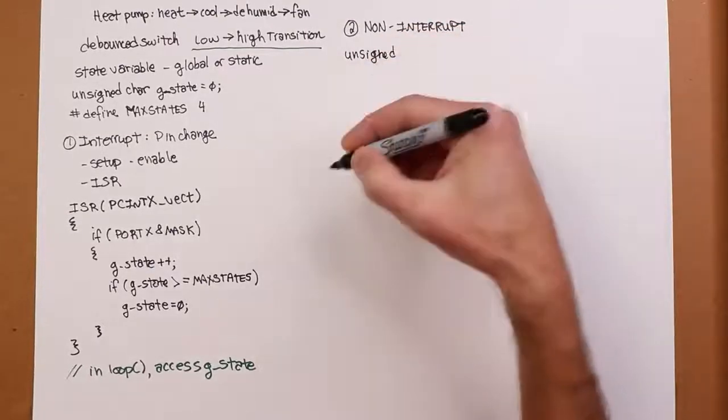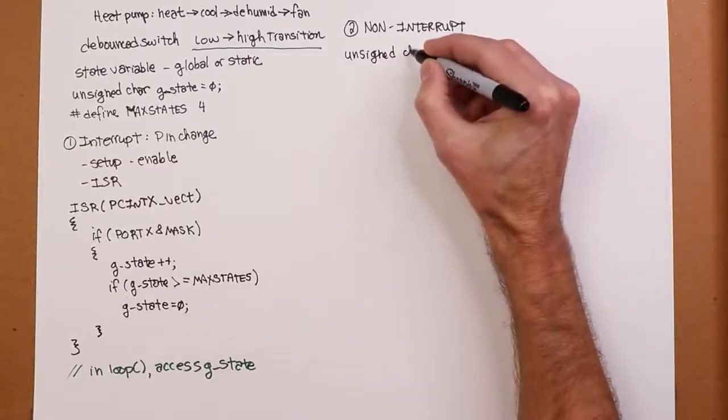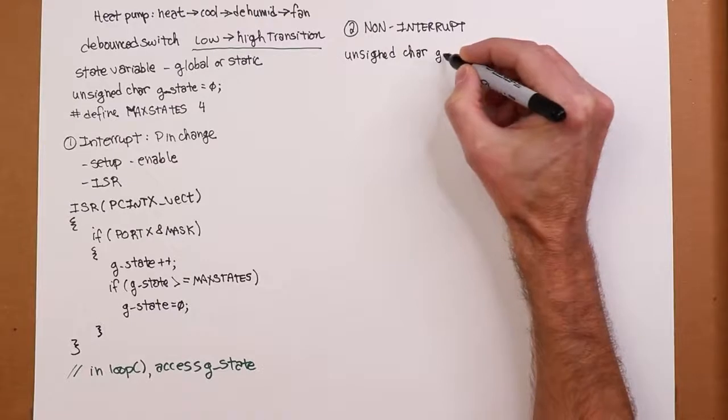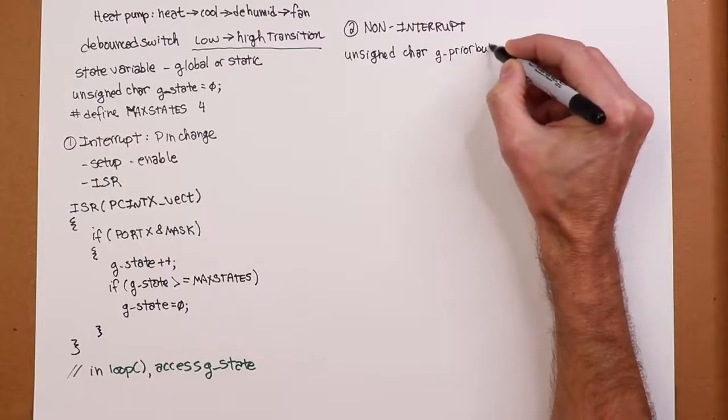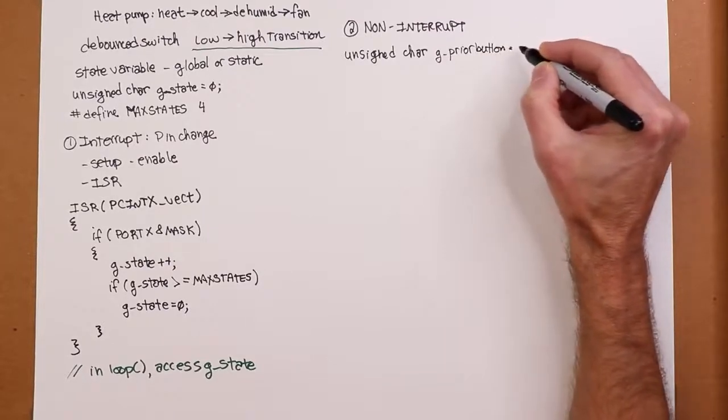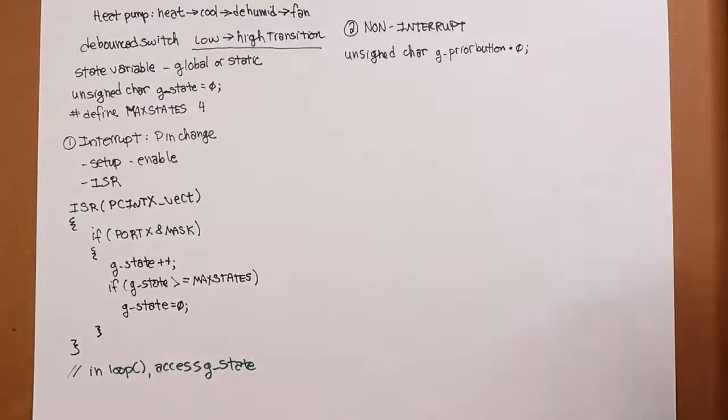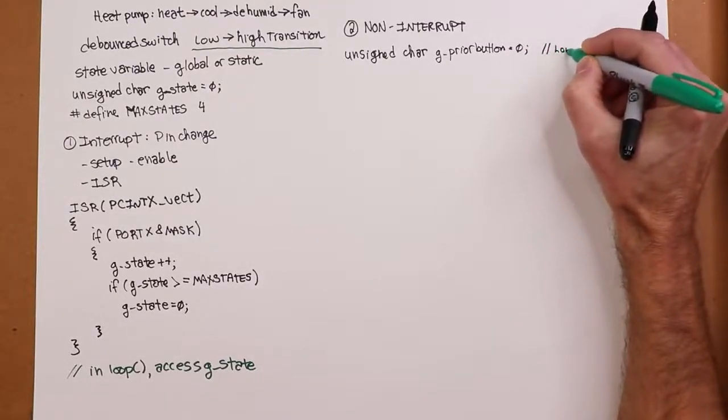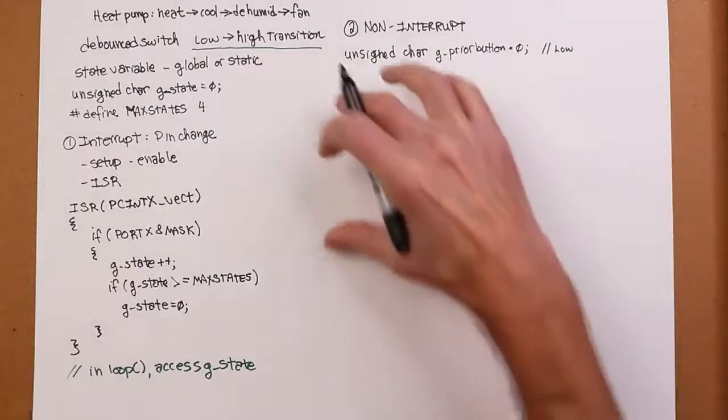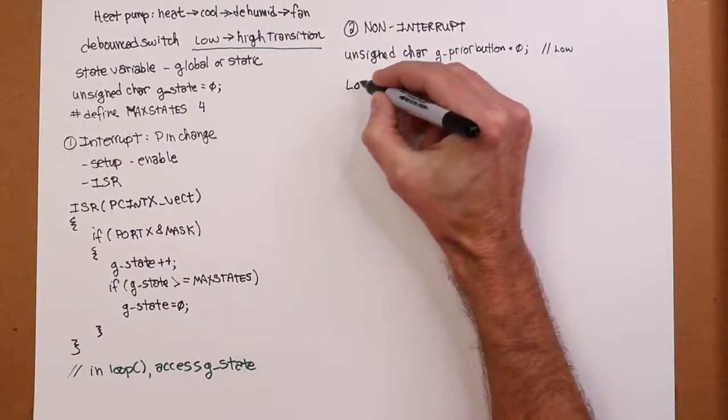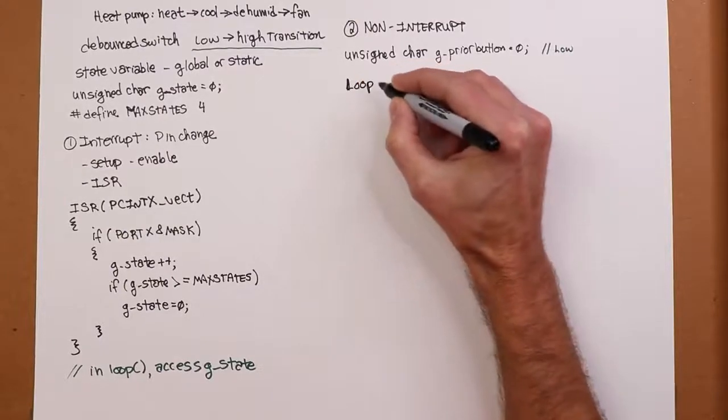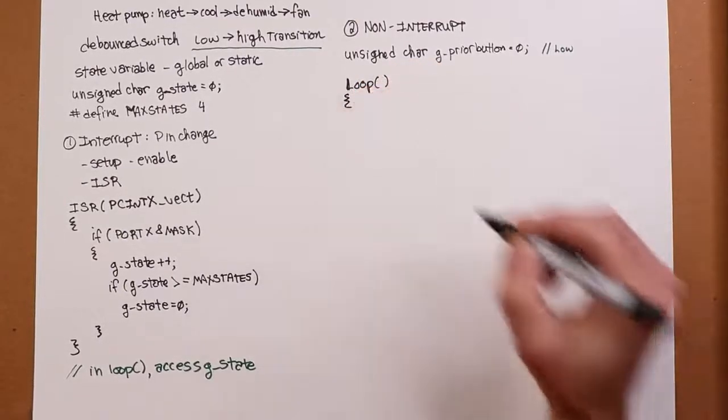So I'm going to come up with another variable here. And again, this only needs to check is or is not. So that's just a character. And again, this is going to be a global. I'm going to call this prior_button. What was it before? So by calling it zero, I'm implying that the prior state was low. All right? So now I'm going to write my loop function. But, you know, what I'm going to write, of course, could be in a function that is called by loop. But just to keep it simple, all right, we have our loop function over here. That should be a lowercase l.